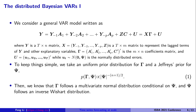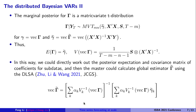With these settings, gamma follows a multivariate normal distribution conditional on psi, and psi follows the inverse Wishart distribution. The marginal distribution of gamma is a multivariate t distribution with a given location matrix and degrees of freedom. For the posterior, we can obtain the posterior expectation and posterior variance for this VAR model.